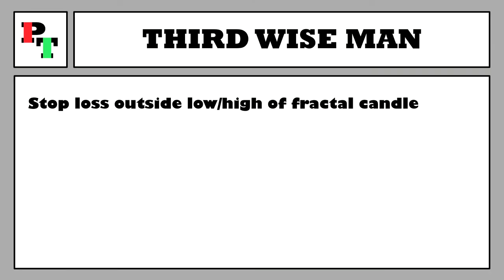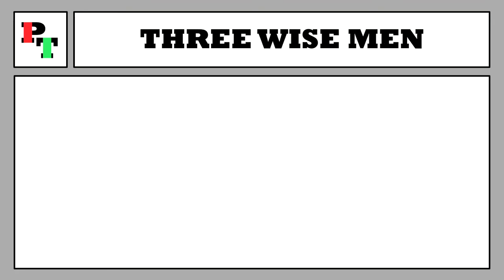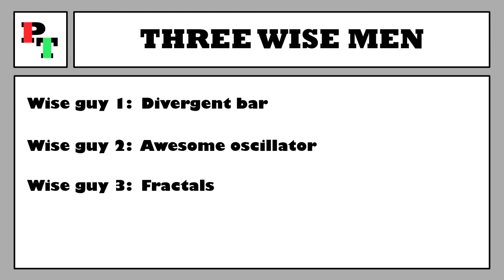For the stop loss on Wise Man 3, it's initially placed just outside the extreme price of the fractal candle — a touch beneath the low for a buy trade, just above the high for a sell trade. From that point, just as with the first two wise men, we manually trail the stop loss to be just outside the outer price value of the last four candles. Those are our three wise men: Wise Man 1 the divergent bar, Wise Man 2 the Awesome Oscillator, and Wise Man 3 the fractal breakout.